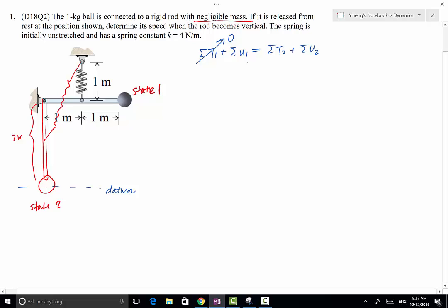Its initial potential energy has two parts. We have U1g, the gravitational potential energy, as well as U1e, but because initially the spring is unstretched, this is also zero. So all we have is U1g.